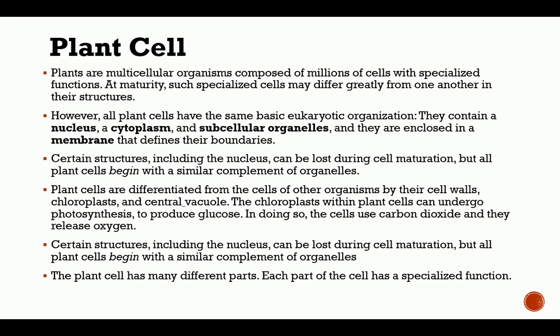Plants are multicellular organisms composed of millions of cells with specialized functions. At maturity, such specialized cells may differ greatly from one another in structure. However, all plant cells have the same basic eukaryotic organization — they contain a nucleus, a cytoplasm, and subcellular organelles, and they are enclosed in a membrane. Certain structures including the nucleus can be lost during cell maturation, but all plant cells begin with a similar complement of organelles.